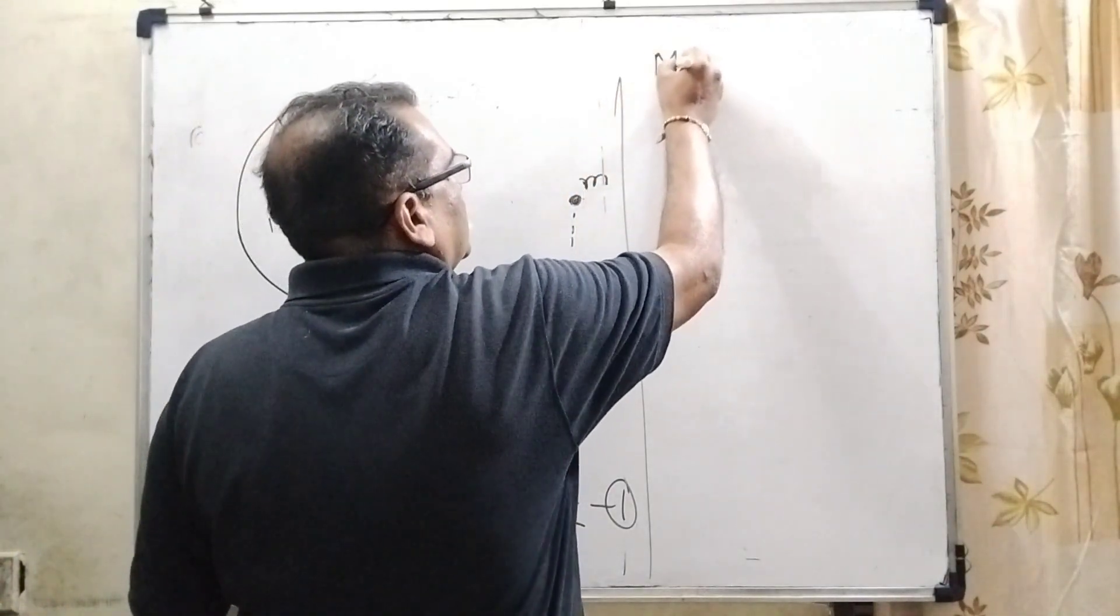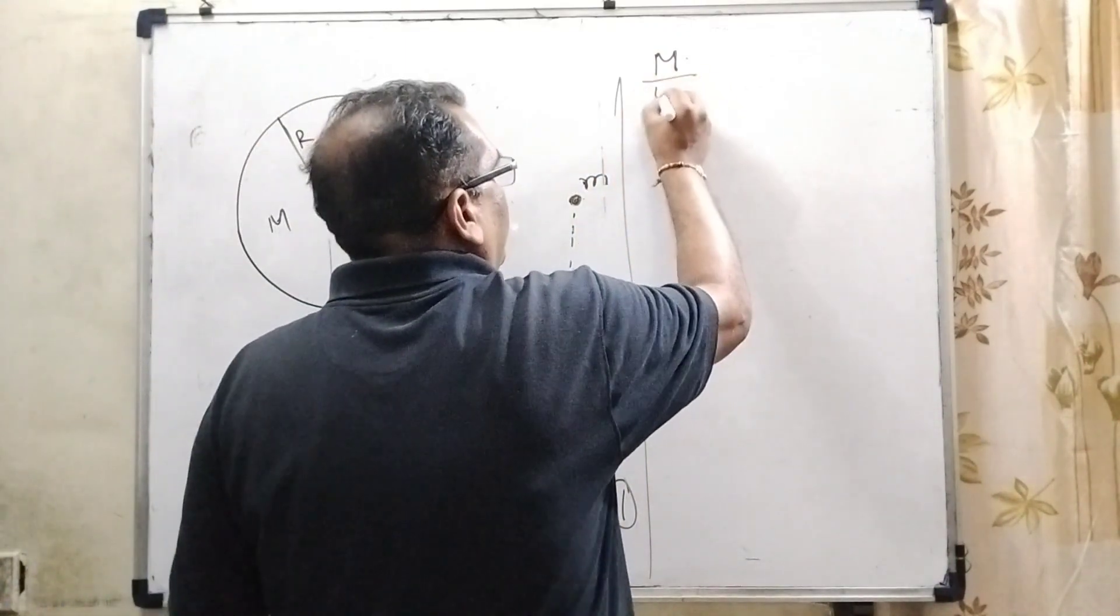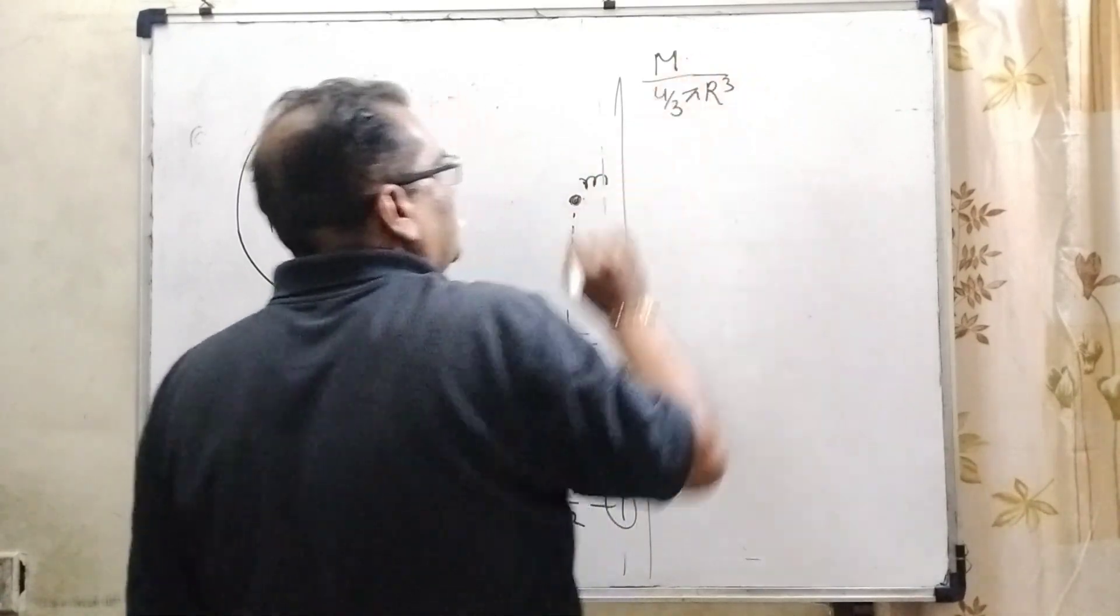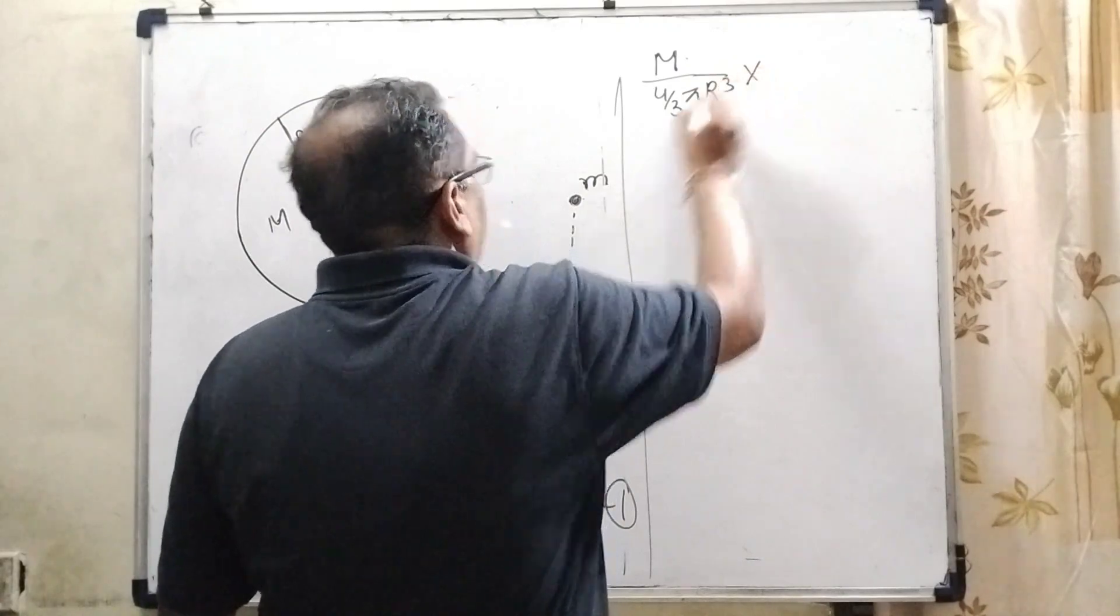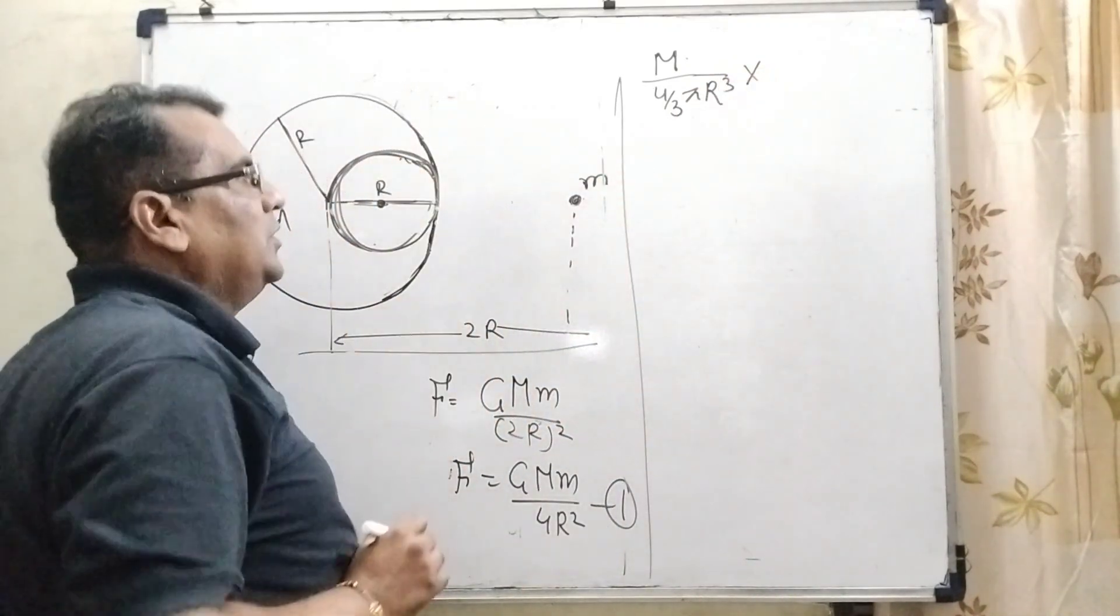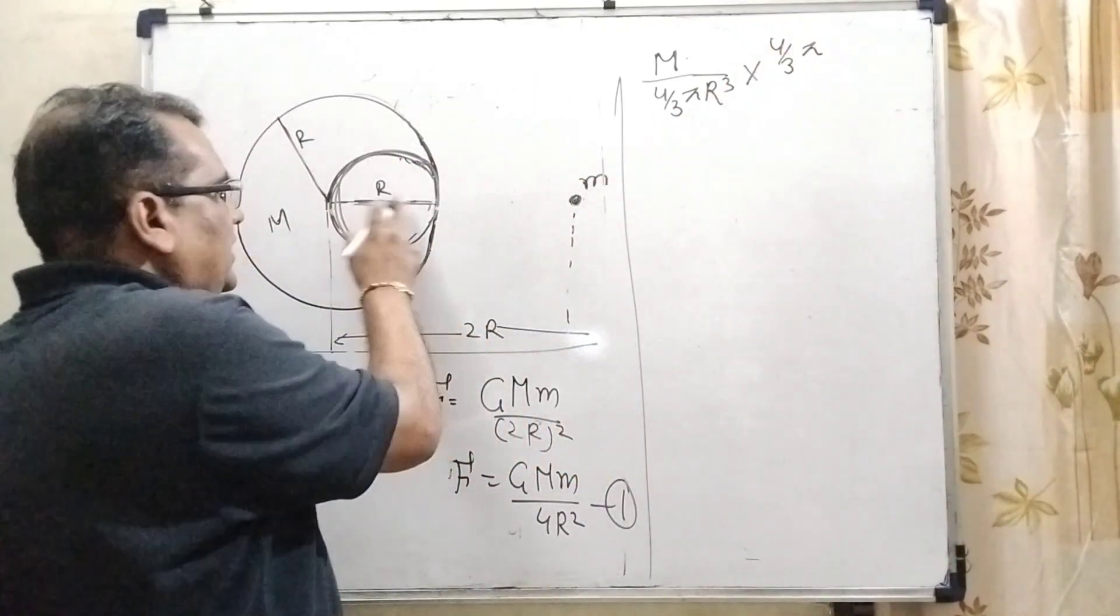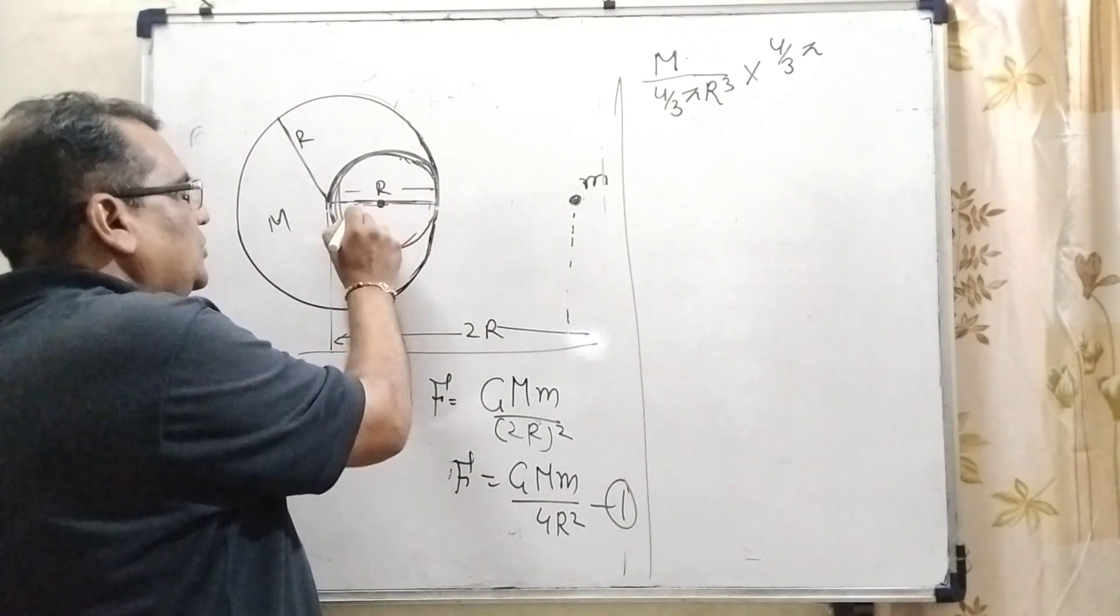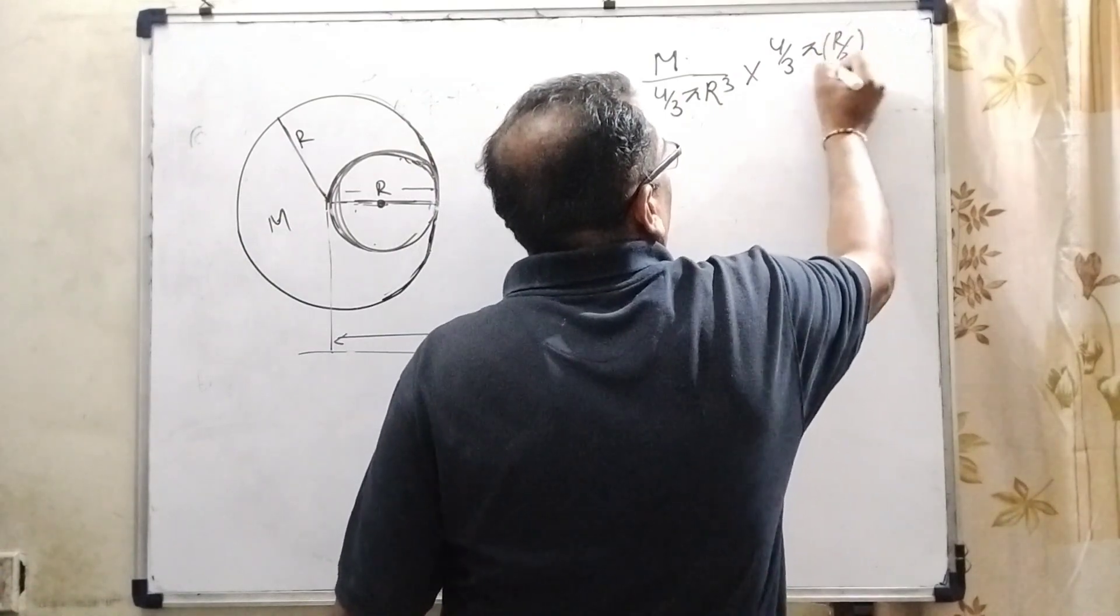Let the mass capital M is the mass per unit volume. So M by 4 by 3 pi capital R cube, this is mass per unit volume of this big sphere. But we have to calculate the mass of this body. What is the volume? 4 by 3 pi and what is the radius? It is the diameter. Here given that total R is the diameter. So what is the radius? R by 2. So here R by 2 whole cube.